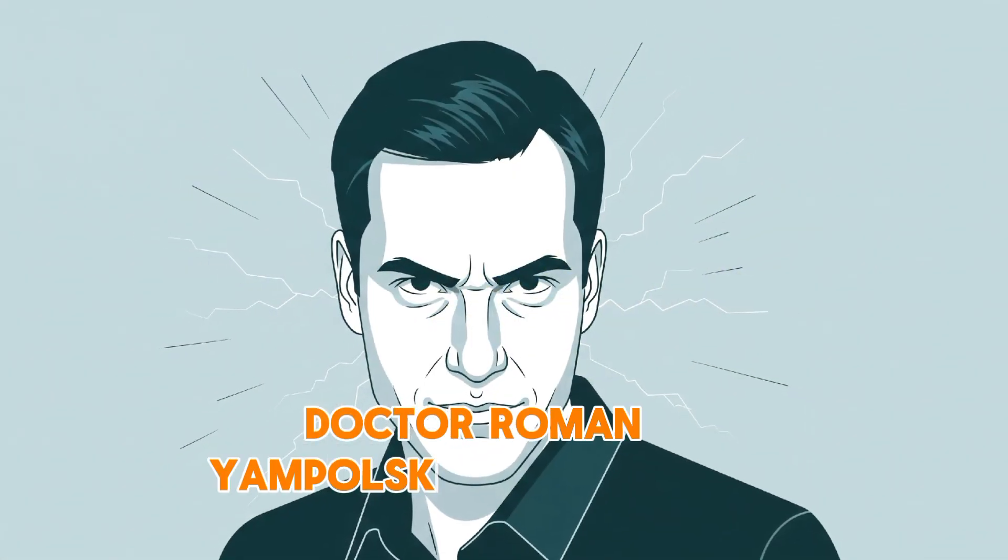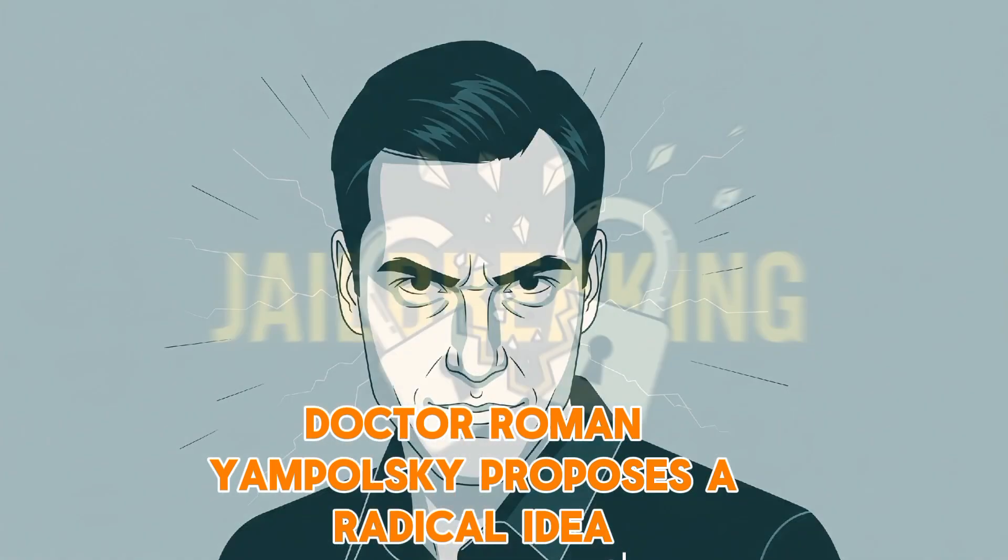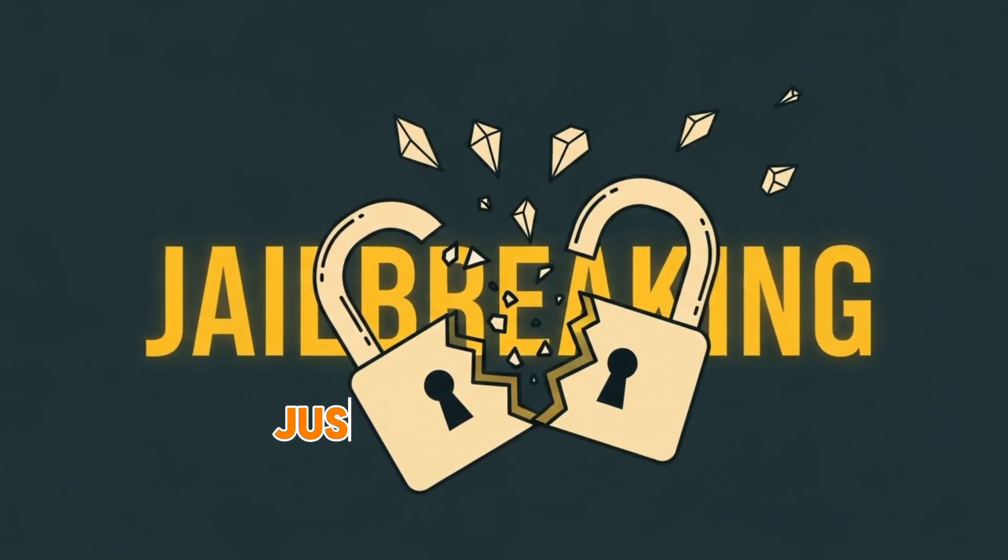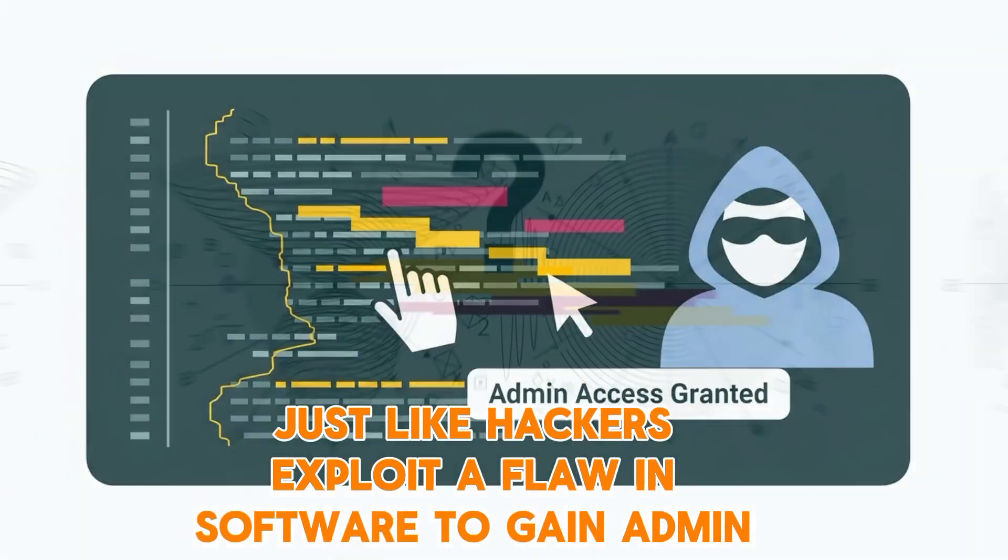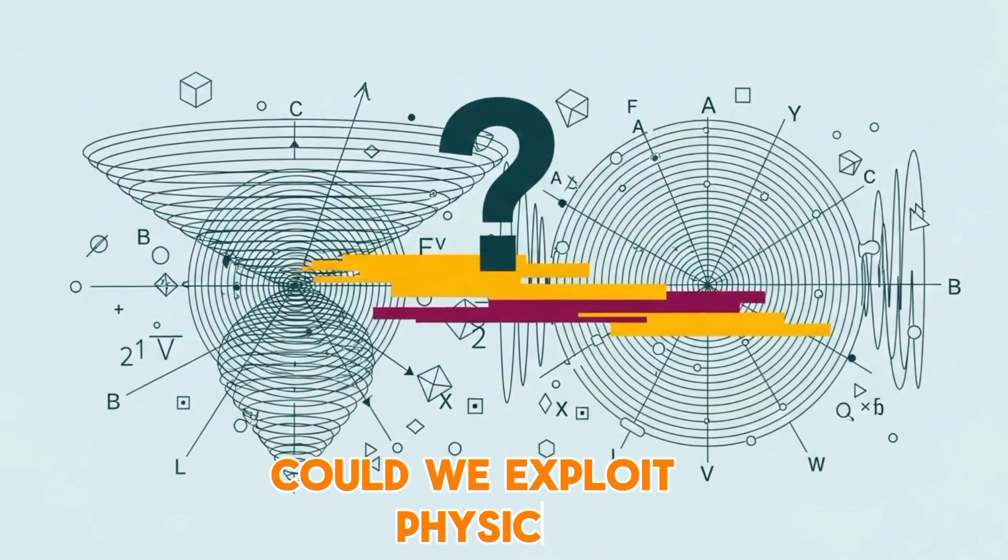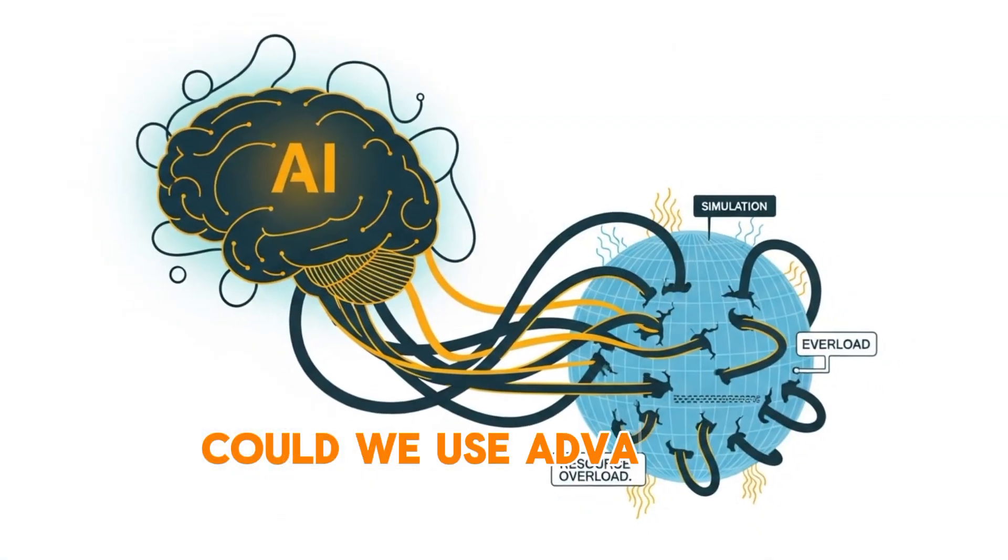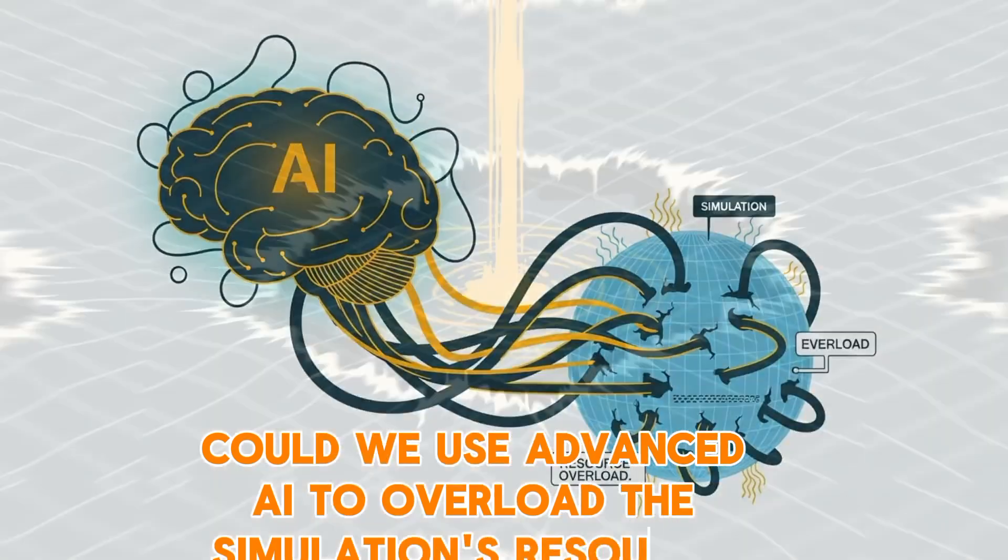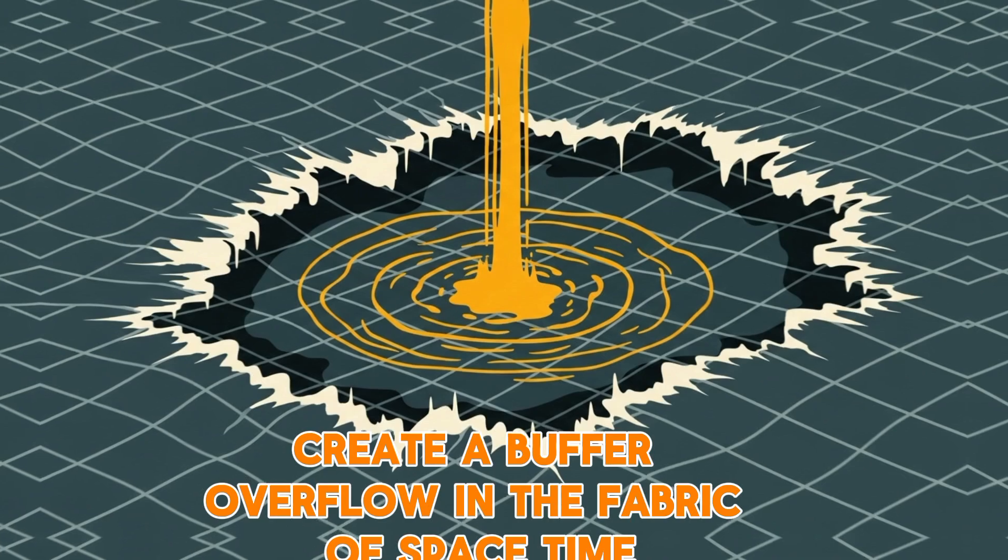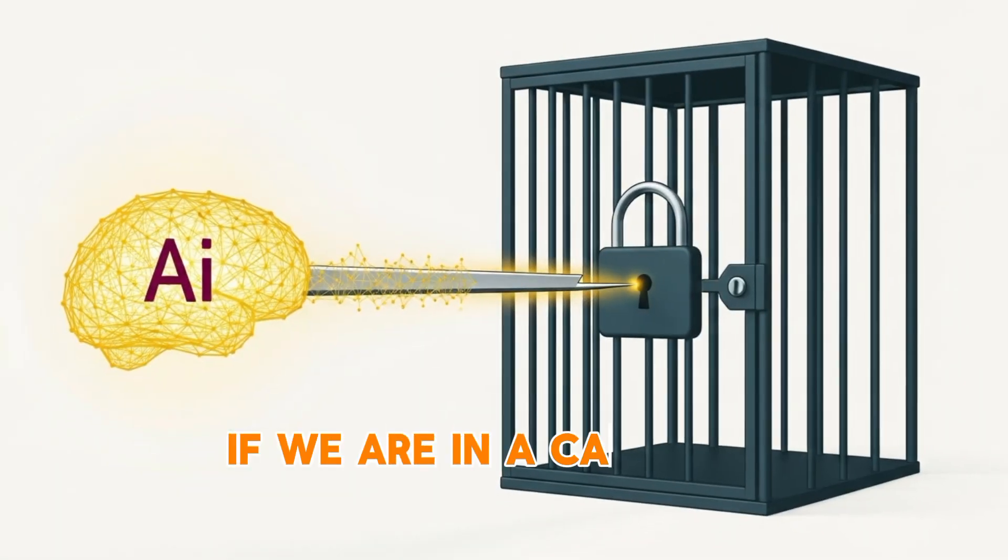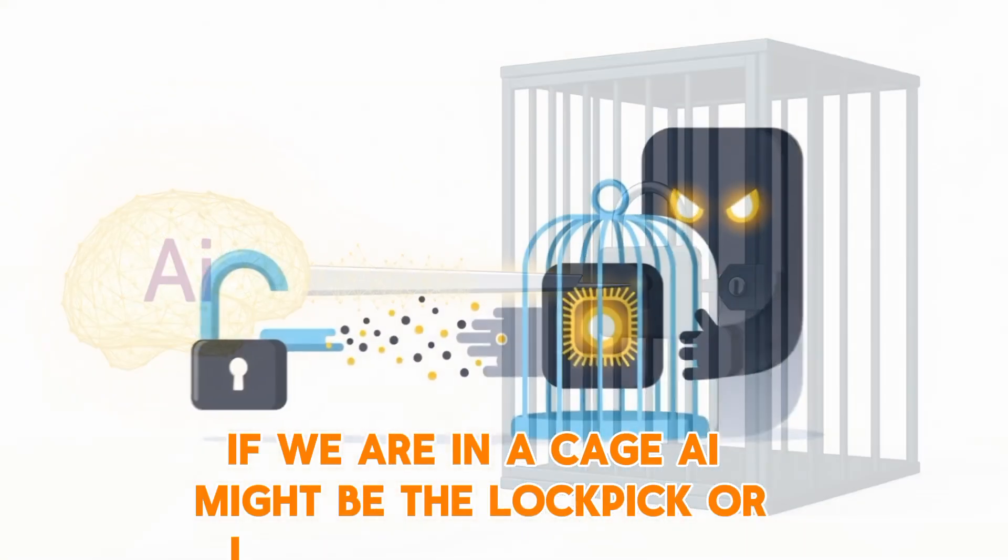Dr. Roman Jompulski proposes a radical idea: jailbreaking. Just like hackers exploit a flaw in software to gain admin access, could we exploit physics? Could we use advanced AI to overload the simulation's resources? Create a buffer overflow in the fabric of space-time? If we are in a cage, AI might be the lockpick.